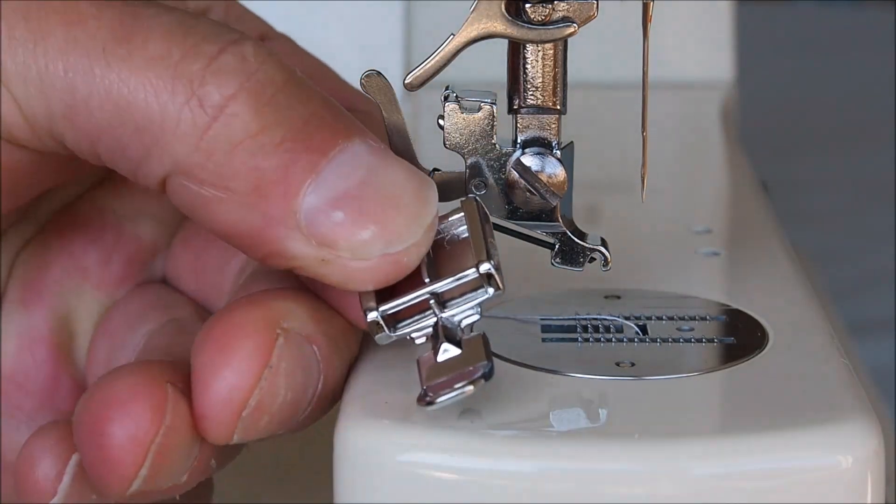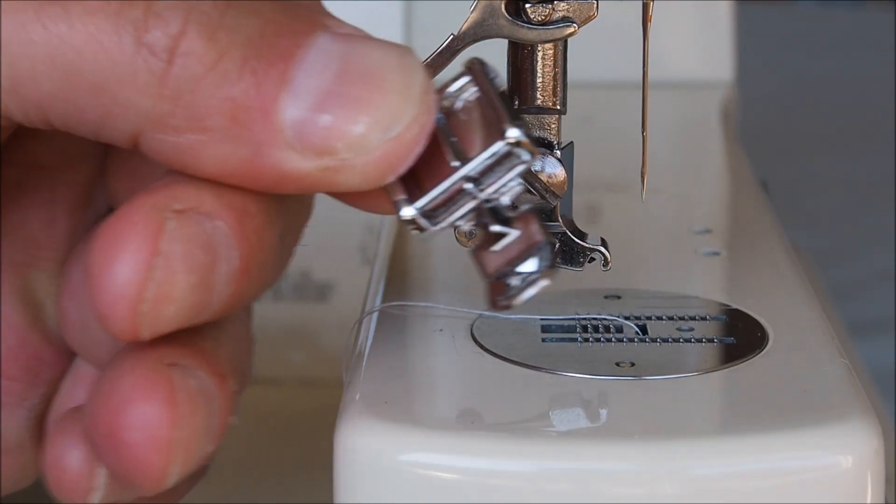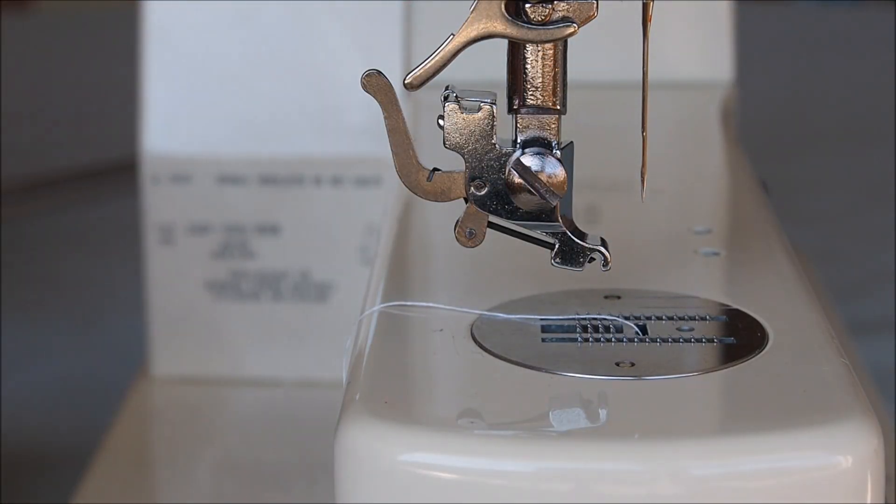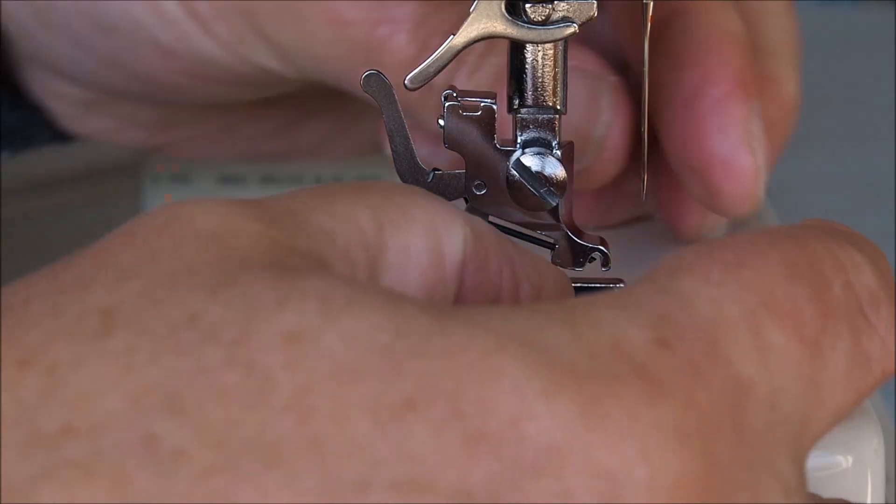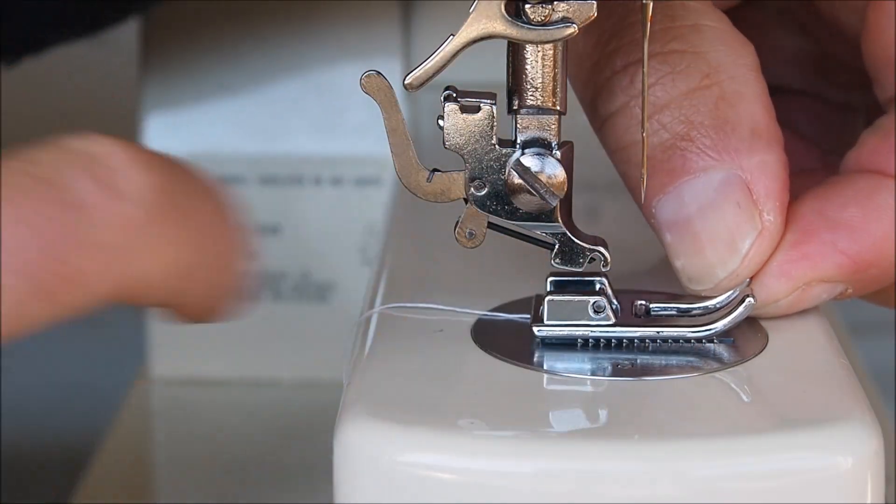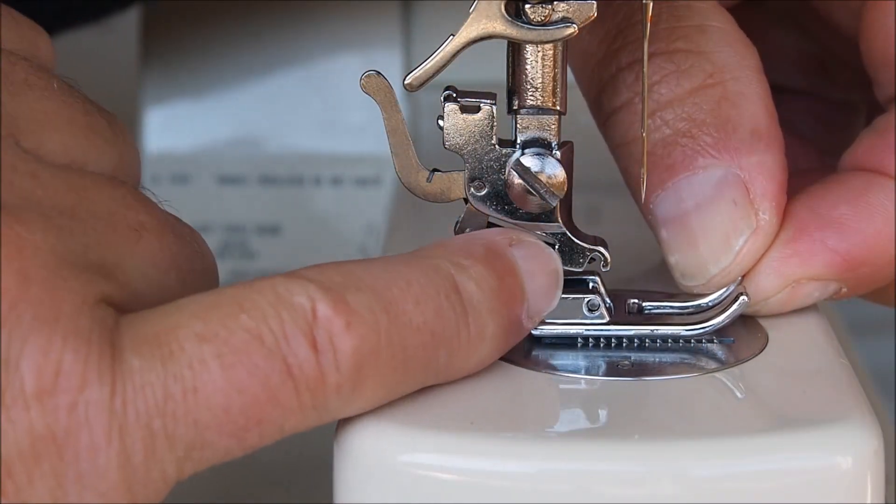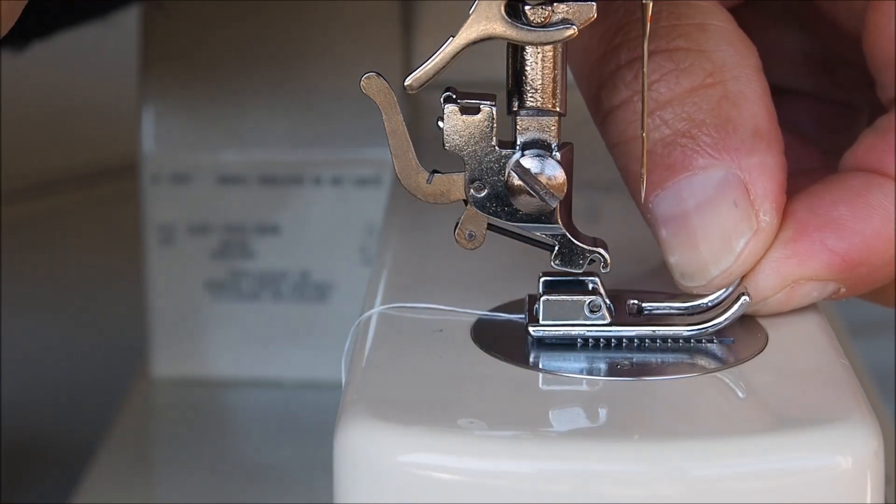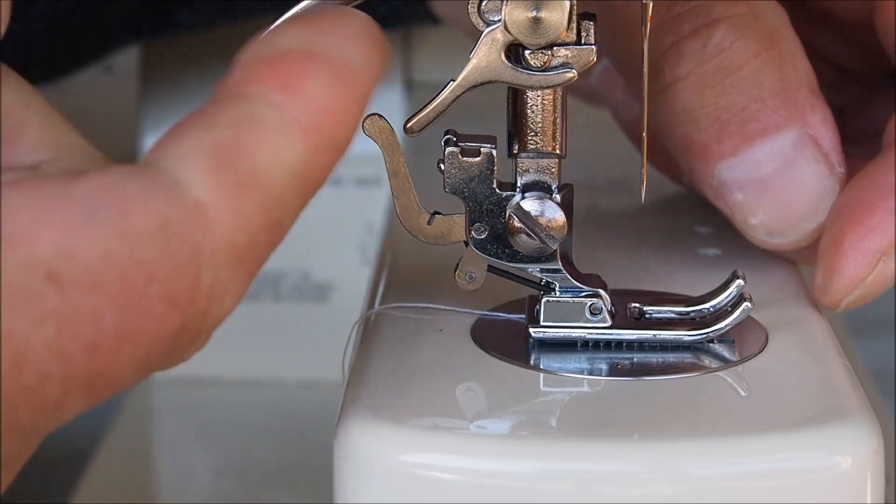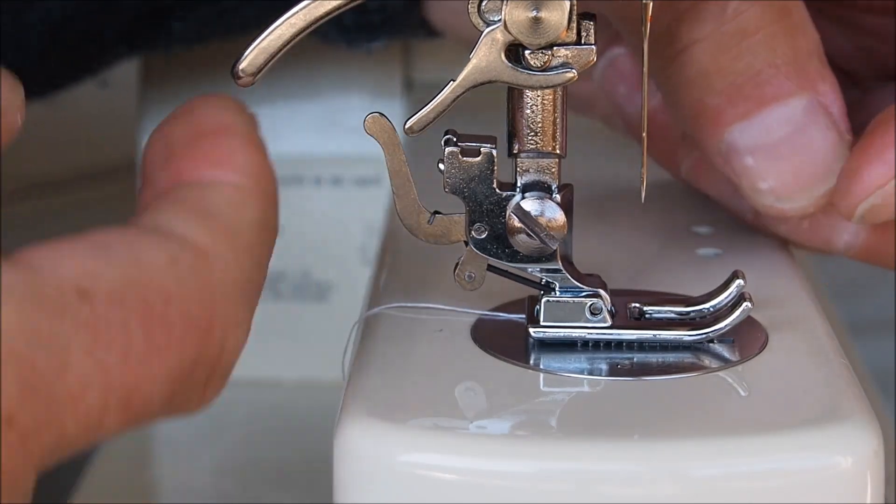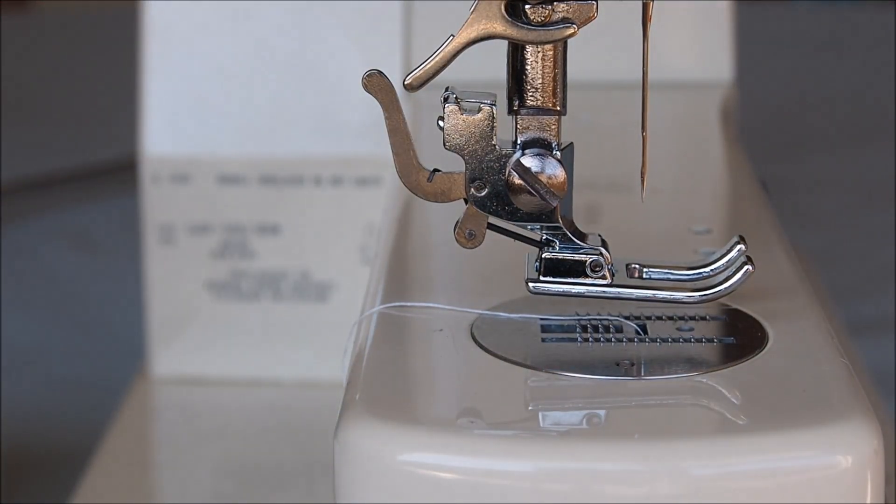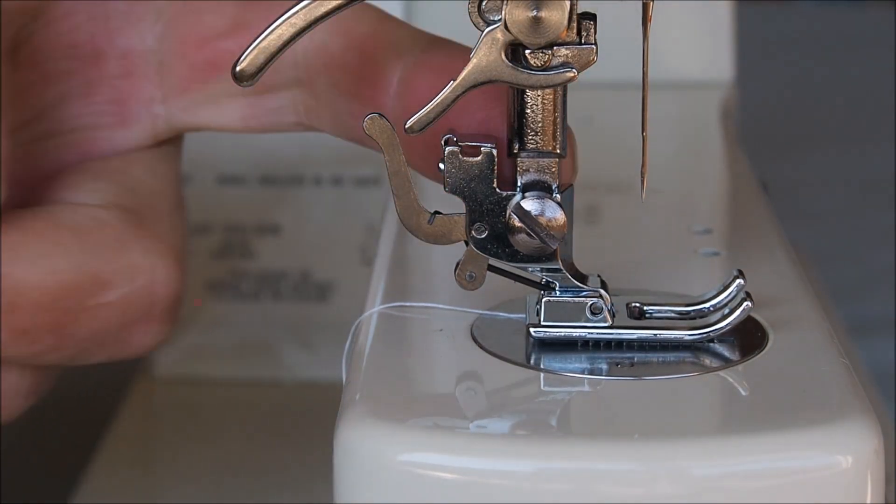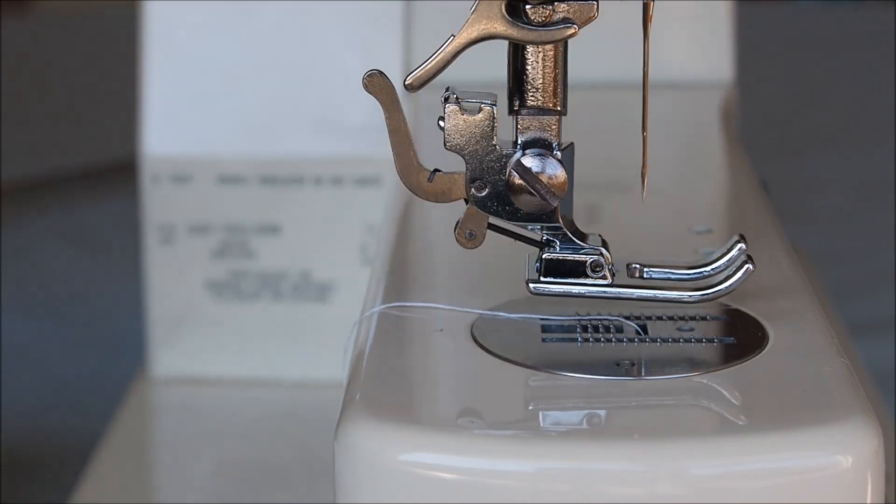Like so a zip foot there. So you can literally just choose what you want. So if we went for instance for the open toe and you just place that with the little cut out there lining up with the little bar on the foot and you just go like so. The little lever here clips it into place and there you go. Now I've got an open toe foot and it can guarantee you that that combination there of the three items would be a lot cheaper than buying the original Bernina foot.